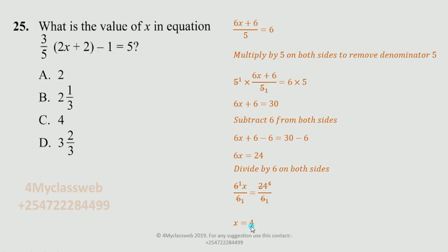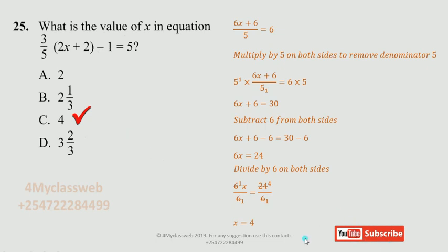Therefore, the value of x equals 4. To verify: substitute x equals 4 — 2 multiplied by 4 is 8, 8 plus 2 is 10, then 3 over 5 multiplied by 10 simplifies to 6, and 6 minus 1 gives 5. That confirms the answer. Looking at the choices A, B, C, D, you will find 4 given as choice C, which is the correct answer. Continue subscribing to this channel for more analyzed questions — thank you very much.